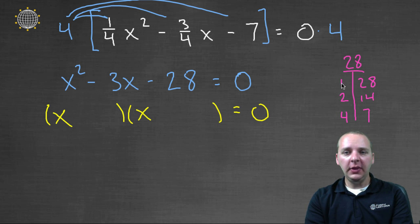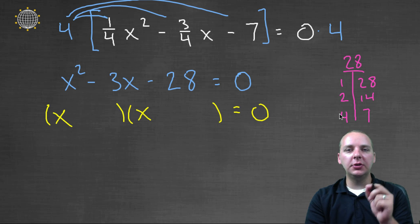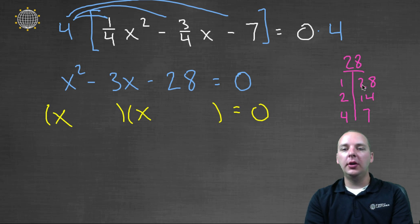Now I'm looking for a pair that if the signs were just right, could add up to a negative three. One and twenty-eight can't happen. Two and fourteen can't give you a negative three. But a four and a seven, if it was a positive four and a negative seven, that could give you a negative three.